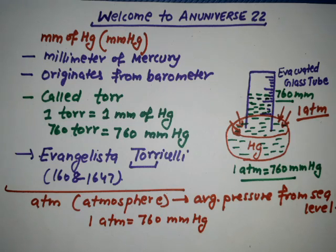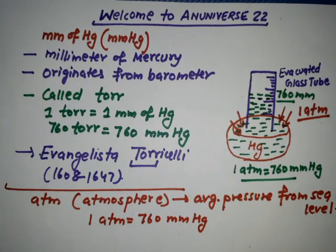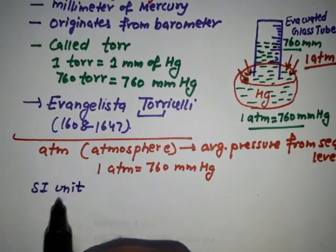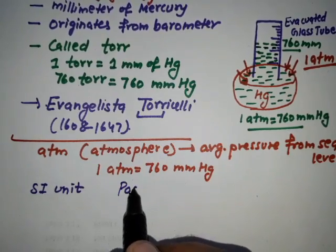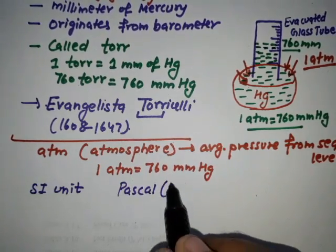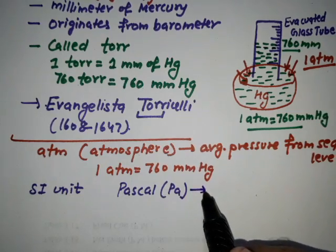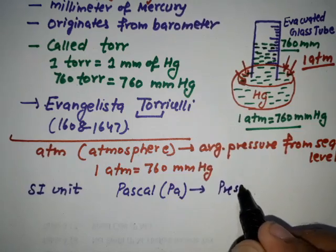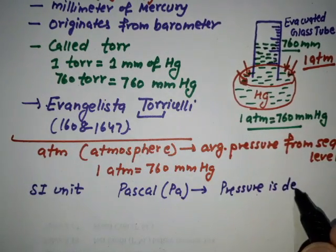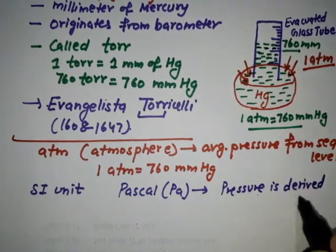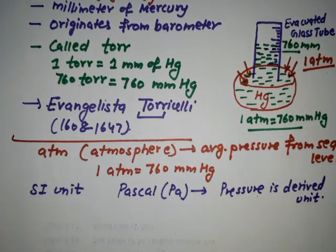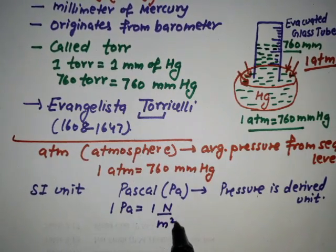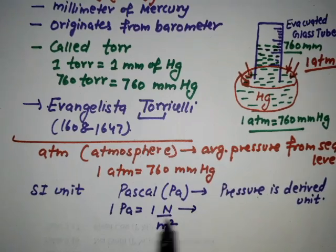The SI unit of pressure is the Pascal (Pa), and this is a derived unit. One Pascal is equal to one Newton per meter squared. Newton comes from force.